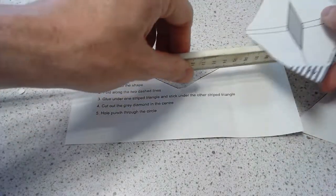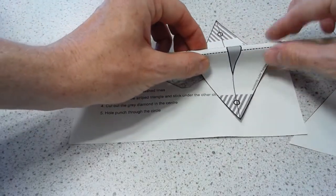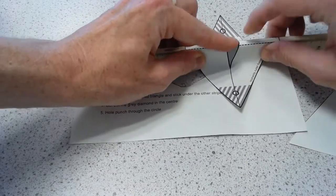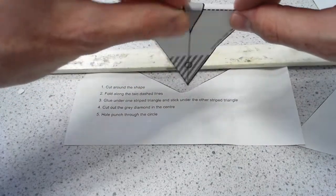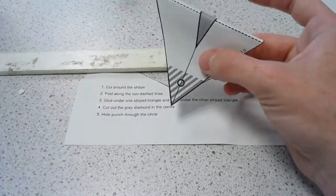You can actually fold it over your ruler if you like, because that's where it's going to go. The two folds are going to fit over your ruler, so you can actually fold it over the edge of your ruler like that to get two folds along the two dashed lines.